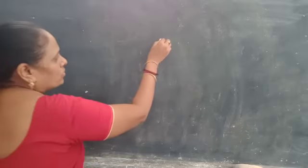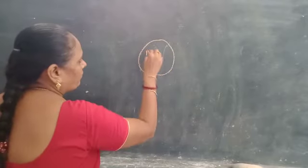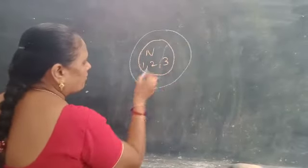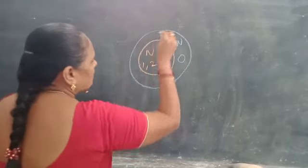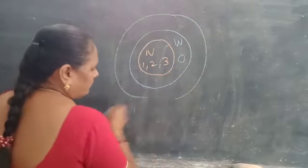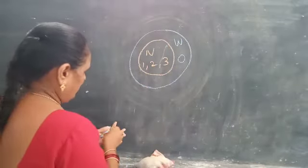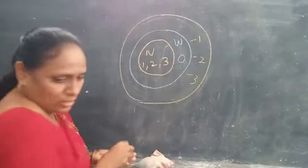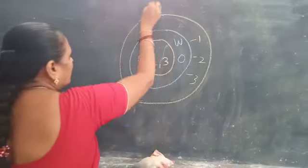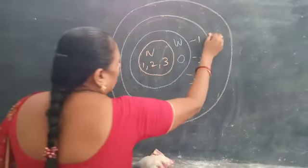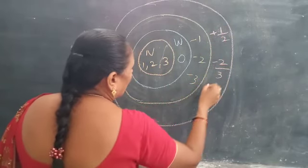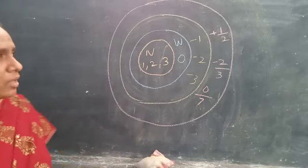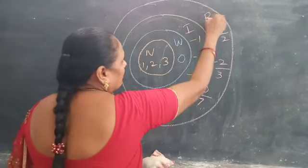We can see this in the form of a diagram. First take natural numbers, starting from 1, 2, 3. Other than natural numbers, what is left over is 0 — these together are whole numbers. Then take integers: other than 0 and 1 to 3, we also have negative numbers. And then the set including fractions like 1 by 2, minus 2 by 3, 0 by 7, and so on — this is the diagram which represents rational numbers. These are integers, and these are rational numbers.